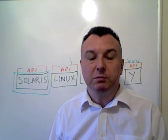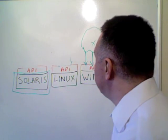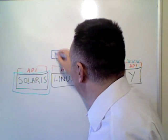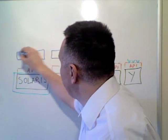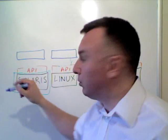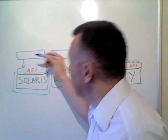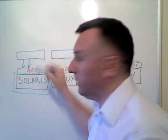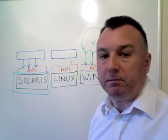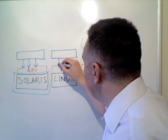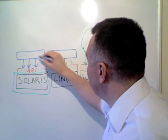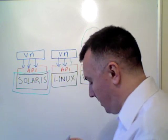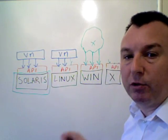Well the solution is in principle something very simple. Instead of having every application talk to the API, let's put another layer in between and let that layer talk down to the API. So one of those arrows might be talking to the file system, one might be the threading model, one might be the user interface. And then build one of these things called a virtual machine that can then go and live on each of these platforms.